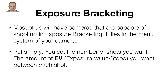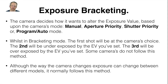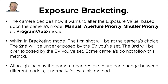Most of us will have cameras capable of shooting in exposure bracketing — it lies in the menu system of your camera. Put simply, you set the number of shots you want and the amount of EV you want between each shot. The camera decides how it wants to alter the exposure value based upon the camera's mode: manual, aperture priority, shutter priority, or program auto mode. Whilst in bracketing mode, the first shot will be at the camera's choice — exposing the scene perfectly. The second will be underexposed by the EV you've set, and the third will be overexposed by the EV you set. Some cameras do not follow this method but most do.